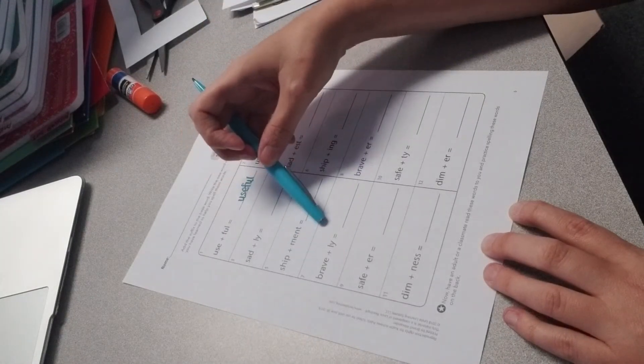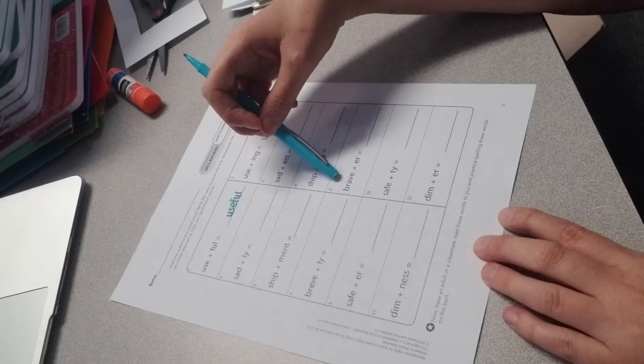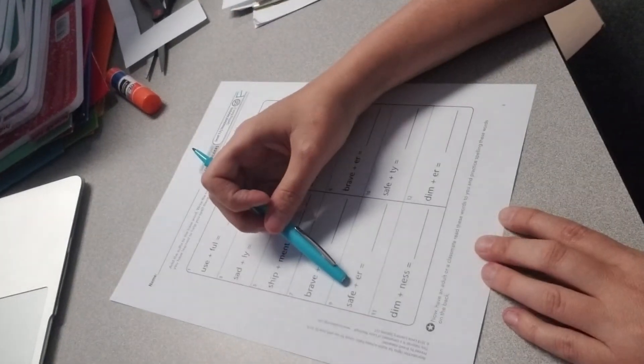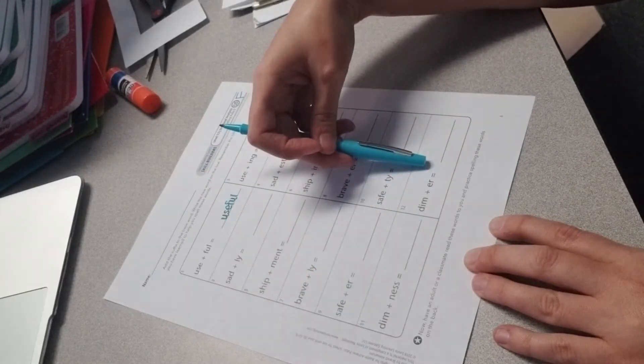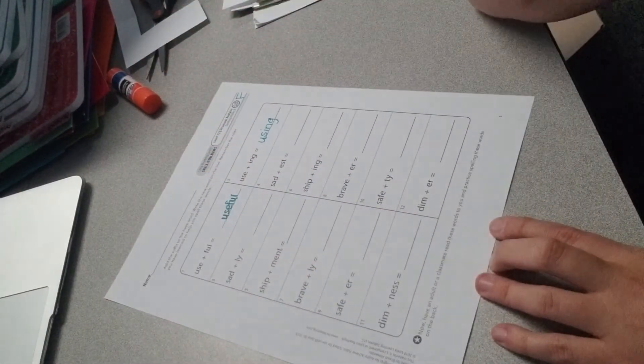Brave, we want to turn it to bravely. Brave and then turn it to braver. Safe to safer and safe to safety. Dim to dimness and dim to dimmer. Go ahead and correct these.